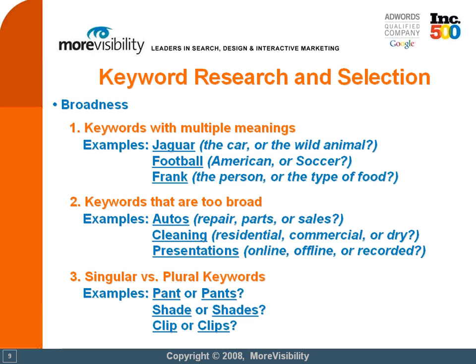Another very important factor to consider during keyword research and selection is the meaning and the broadness of your keywords. Let's take a look at a few examples. First, there are words that have multiple meanings, such as jaguar, which could mean the car or the wild animal.